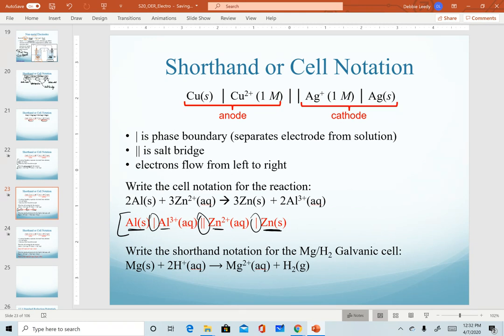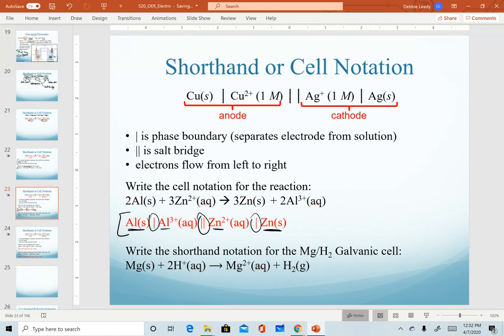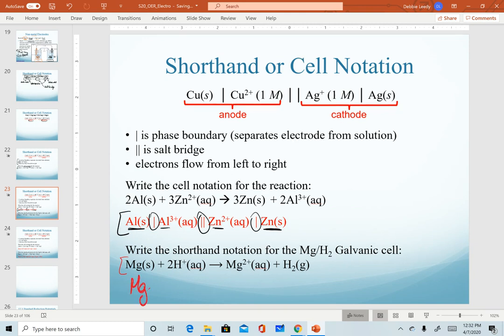One last practice question for you that I will actually work through with you is to understand how you would write the shorthand notation for our magnesium and hydrogen galvanic cell. This is the one we just looked at when we don't have a solid metal in here. Of course, first thing to figure out is what's being oxidized, and hopefully you recognize that the magnesium is being oxidized in here. So putting in our phase boundary, we start with magnesium solid vertical line to separate it from the magnesium ion. Double vertical line to then show what we have in solution or what we have on the cathode compartment. So of course hydrogen has to be our cathode.